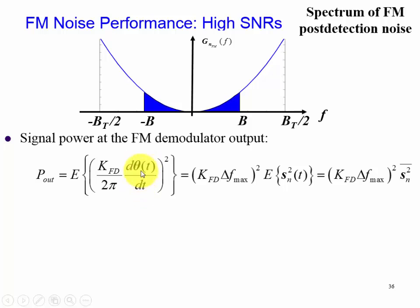Again, our key feature is taking the derivative of our FM signal, which is embedded in our angle. Hence, what we have is K_FD delta f_max squared multiplied by the expectation of our normalized signal.